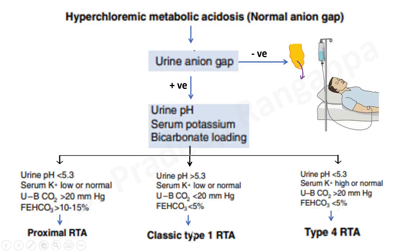To differentiate type 1 from type 2, urine pH is key. Proximal RTA (type 2) shows ability to acidify urine because bicarbonate loss is occurring but less so — urine pH less than 5.3. Type 1 acidosis will have urine pH more than 5.3.